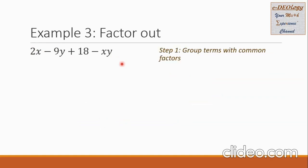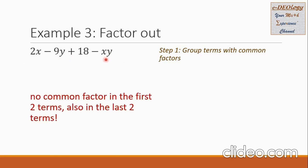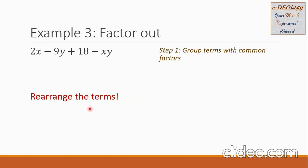Let us have example 3: factor out 2x minus 9y plus 18 minus xy. Let us group terms with common factors. If I group 2x minus 9y, there is no common between these two terms. Also, 18 minus xy — if I group these two, there is no common factors. So I'm going to rearrange the terms.